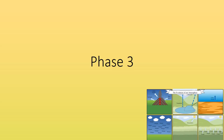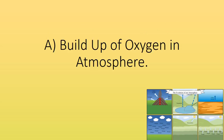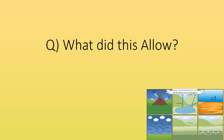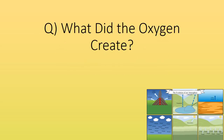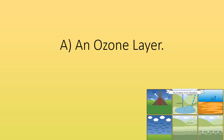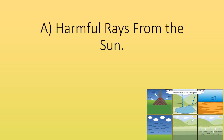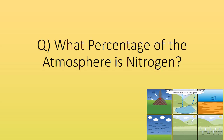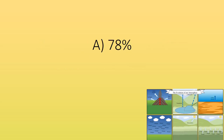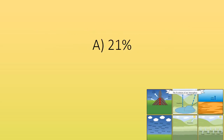Phase three. What killed some early organisms? The build-up of oxygen in the atmosphere. What did this allow? The evolution of more complex organisms, including humans. What did the oxygen create? The ozone layer. What did this block? Harmful rays from the sun. Today, what percentage of the atmosphere is nitrogen? 78%. What percentage of the atmosphere is oxygen? 21%.